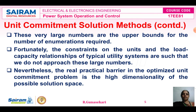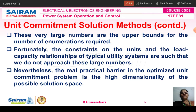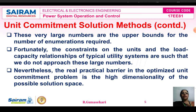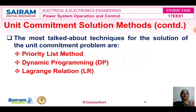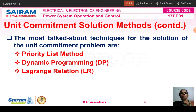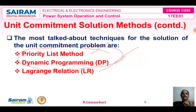So, what are the types of unit commitment solution methods? First is the priority list method. Second is the dynamic programming method, that is the DP method. Third is the Lagrange relaxation method, that is LR. Our syllabus includes only the priority list method and dynamic programming method. First, we studied about the priority list method.